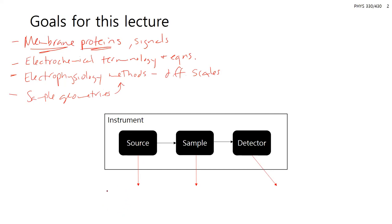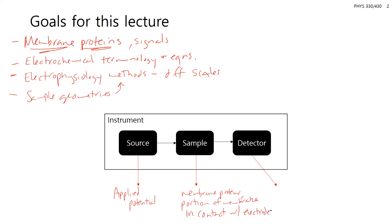With our instrument block diagram, our source is going to be some applied potential. The sample is going to be some form of membrane proteins or a portion of a membrane, and these are going to be in contact with electrodes — one electrode with a reference electrode somewhere else. Since we're working with electrons here, the detection is all electronics. Unlike most other methods we've discussed that use photons, which have to be converted to electrons, here we can keep the detection quite simple.